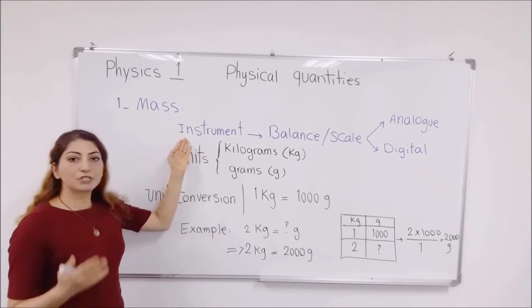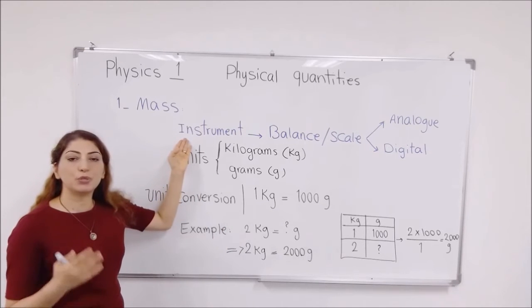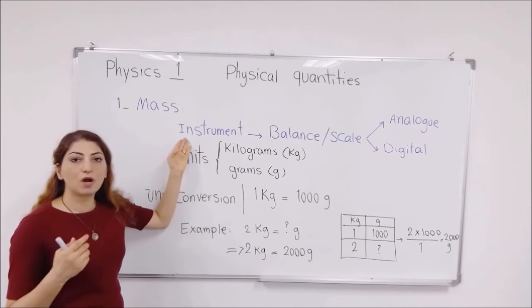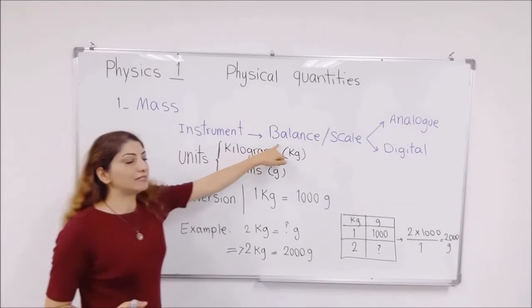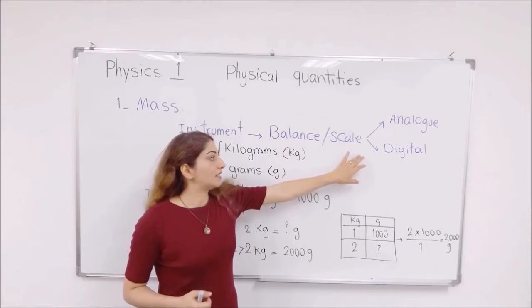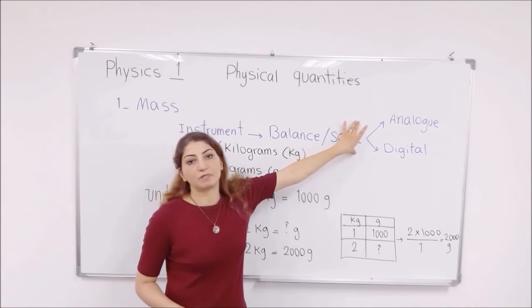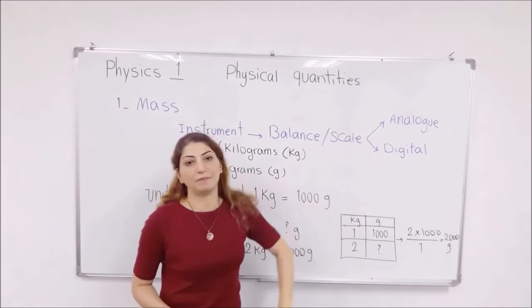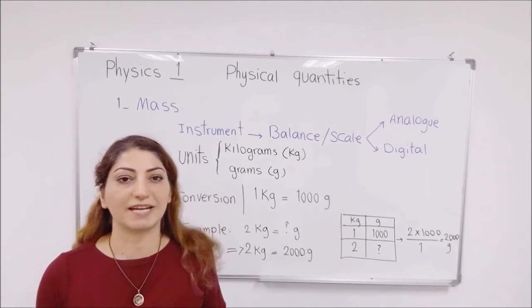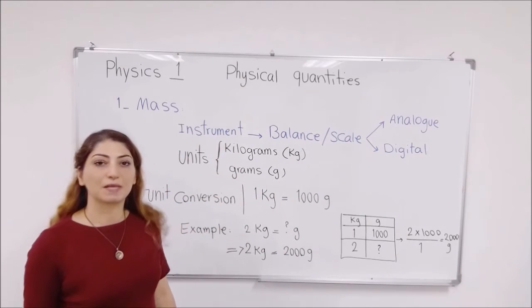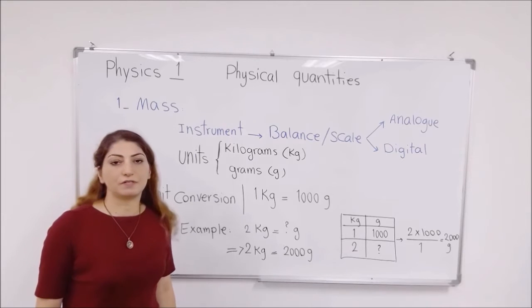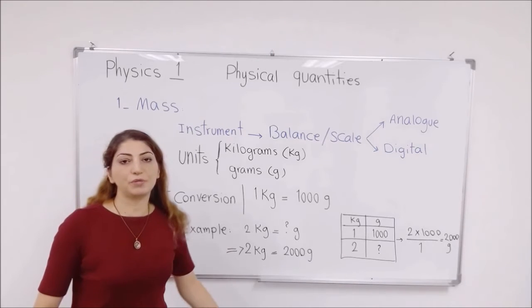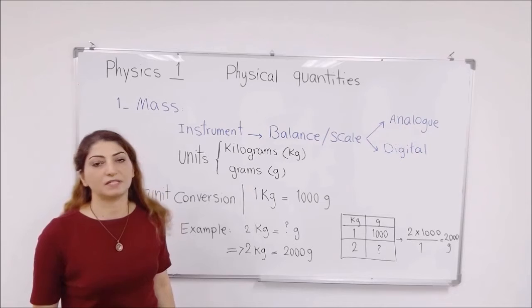And the instruments or tools that you use to measure the mass of objects can be balance or scale, and comes in two different types. One of them is analog or manual, and the other one can be the digital scale. There are many different units that can be used to measure this quantity.